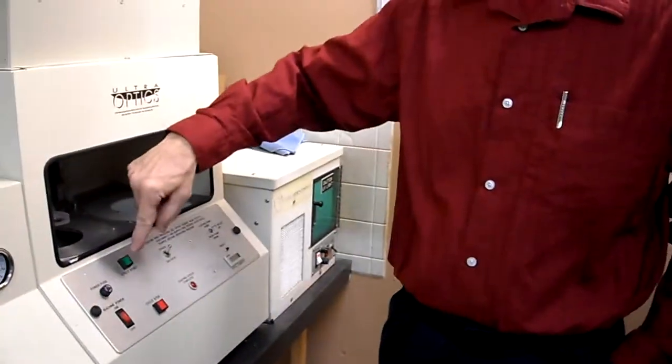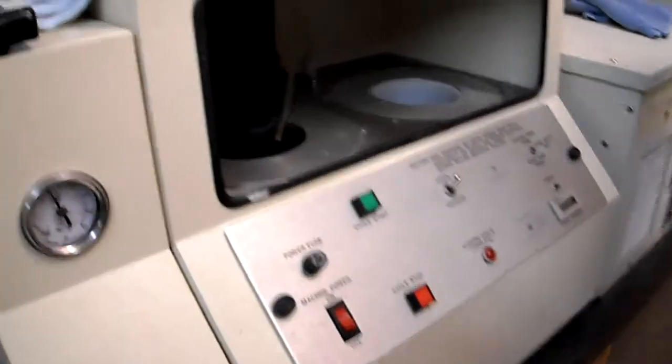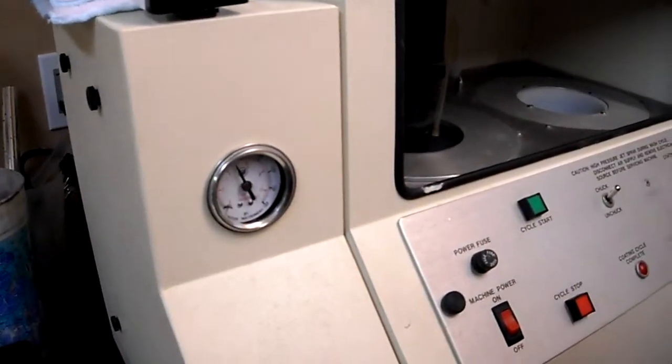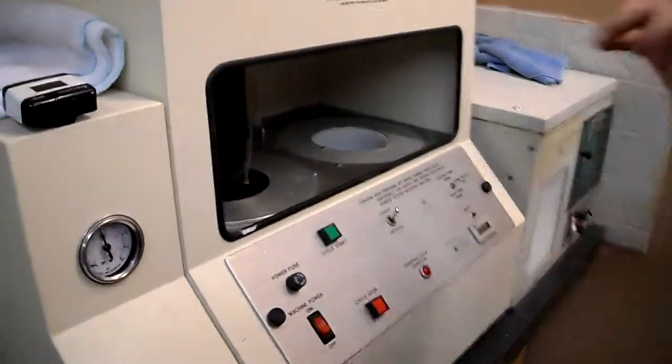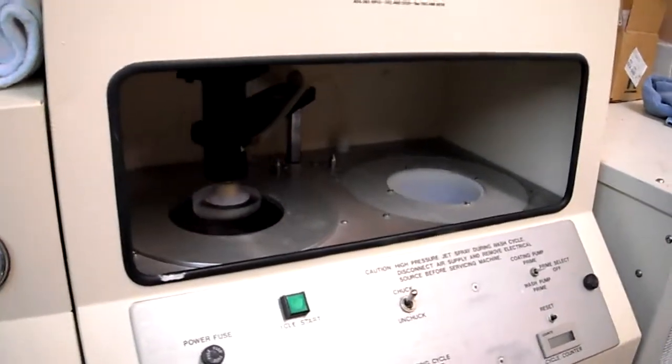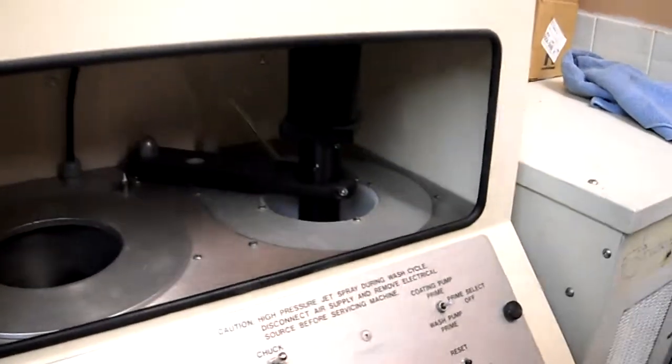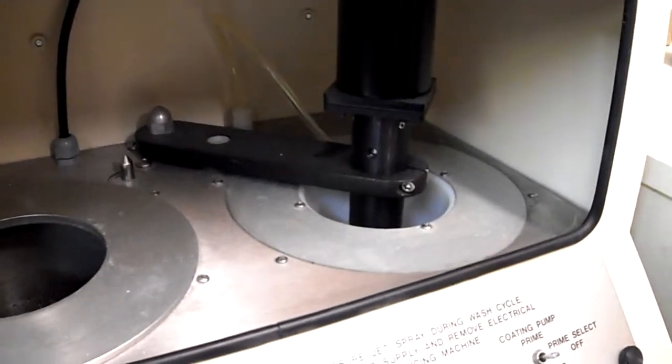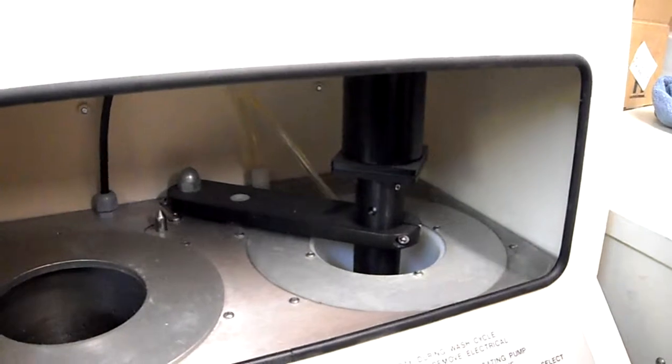I'm going to hit Cycle Start. The machine washes the lens, then it spins the lens. It comes over here and coats the lens, then spins the lens again.